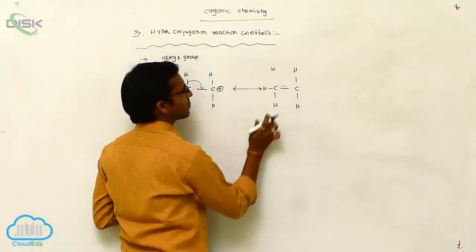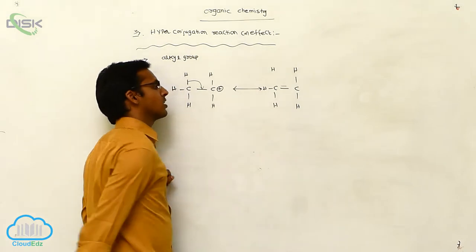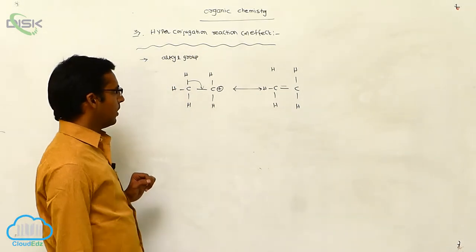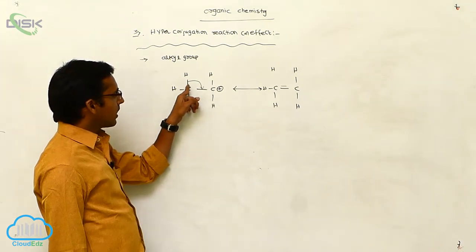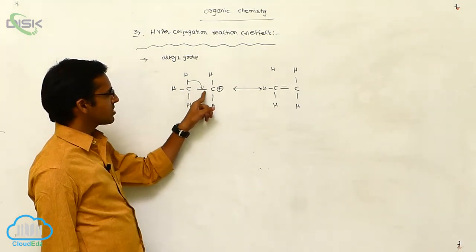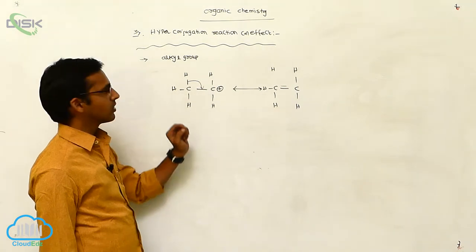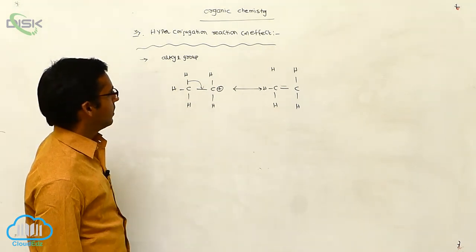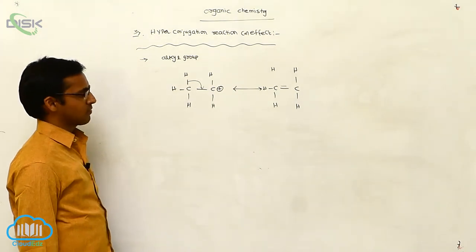The charge is neutralized and you are getting a positive charge. This is a no bond resonance effect — the sigma electron is shifted from an alkyl group to an adjacent carbon position, which is called the hyperconjugation effect or no bond resonance effect.